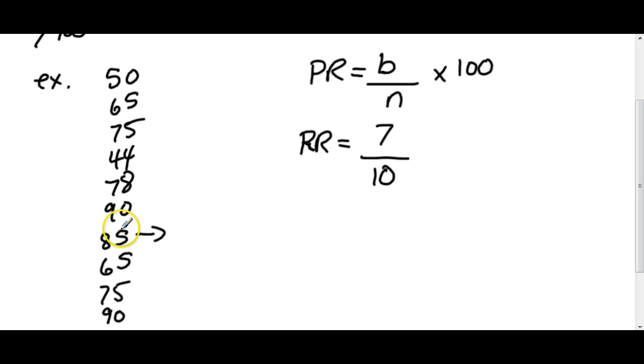And the total is out of 10, because there's 10. And I multiply that by 100, that is equal to 70%.